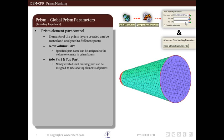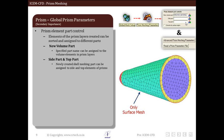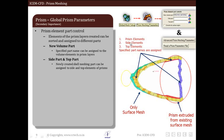As an example we will see this. This is only a surface mesh. From that we extrude the prism layer. What we have is prism elements, side elements, and top elements and we can specify part names and specified part names are assigned to these.